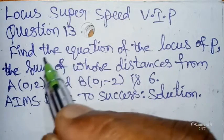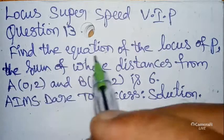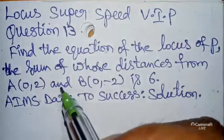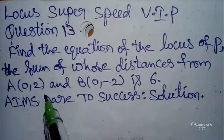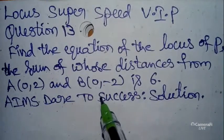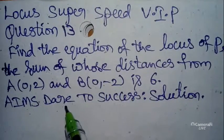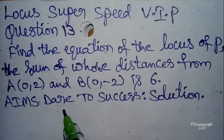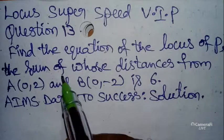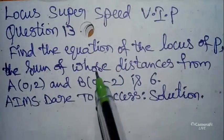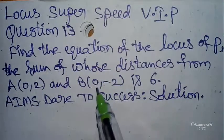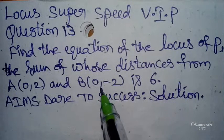Today I will discuss with you: find the locus of P, the sum of whose distances from A(0, 2) and B(0, -2) is 6. This is from Aims Day to Success mathematics, Locus chapter. This type of question I will explain to you.